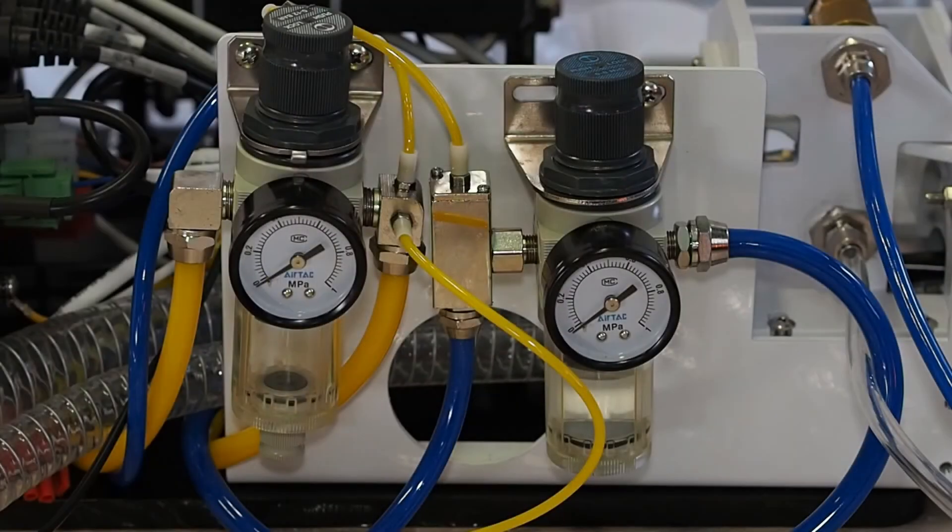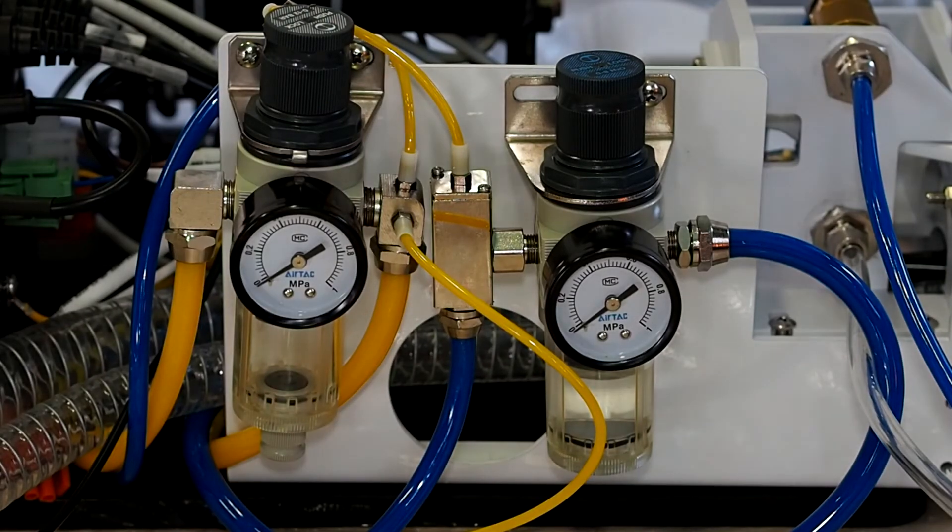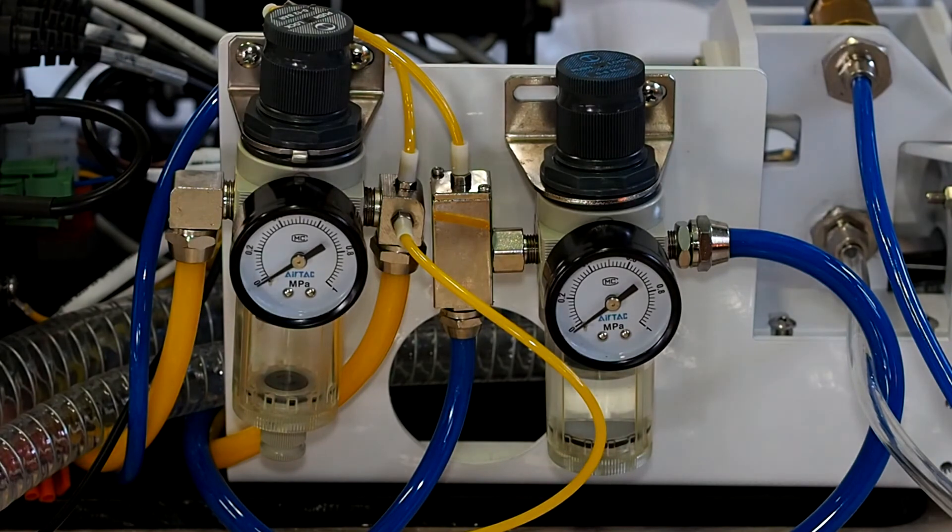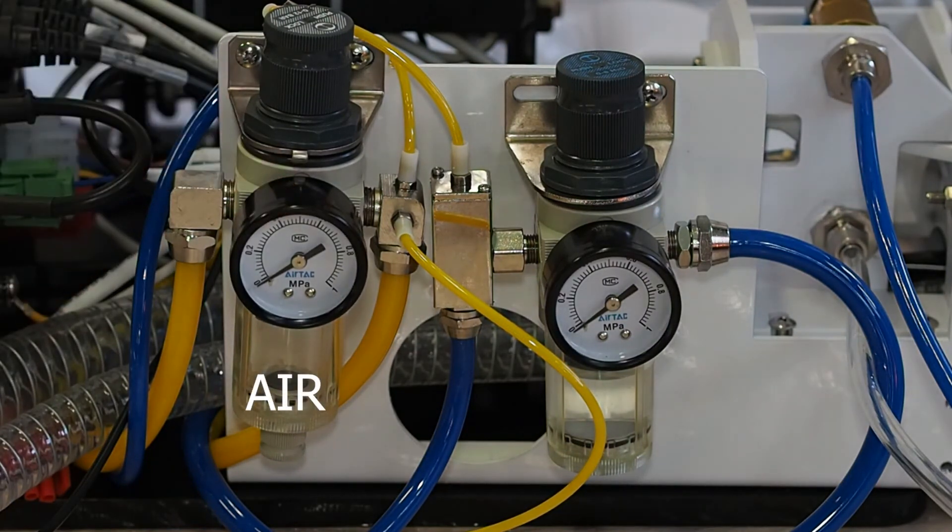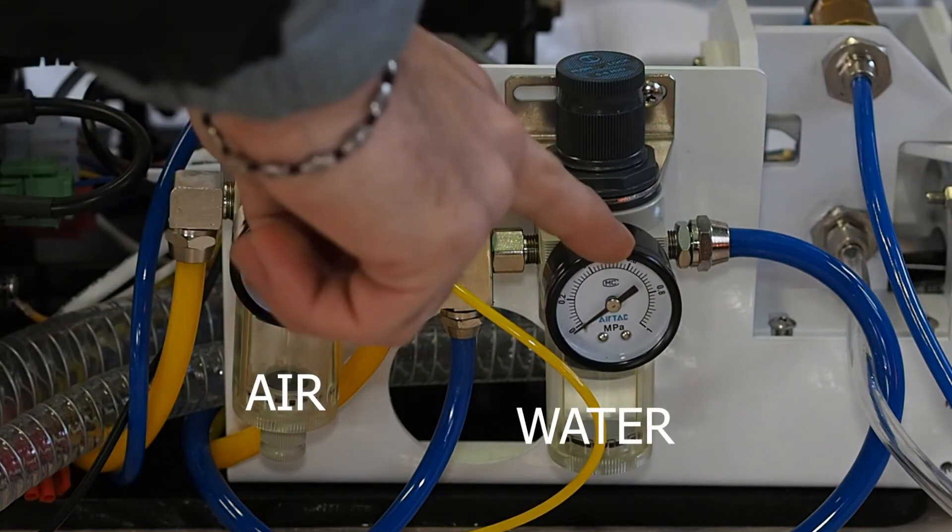The last check you can do is to see if the air or water pressure is properly adjusted. You can control it at the base of the dental unit. There are two valves. The right pressure for the air is 5 to 6 bar, and at least 3 bar for the water.